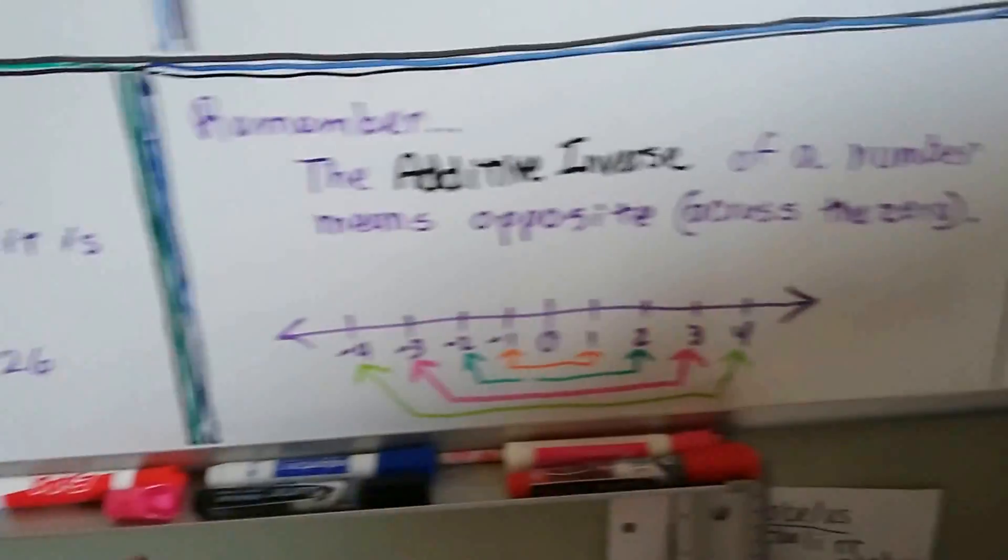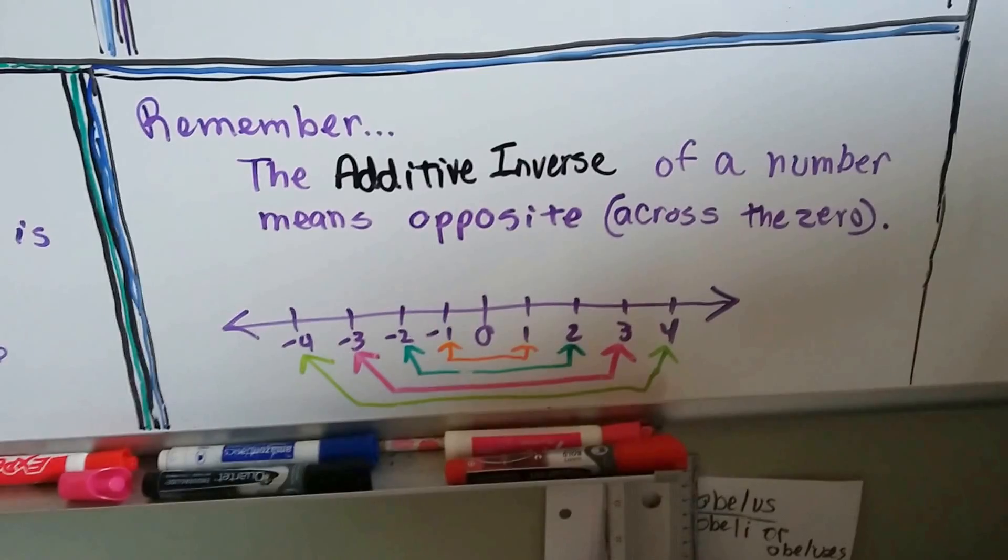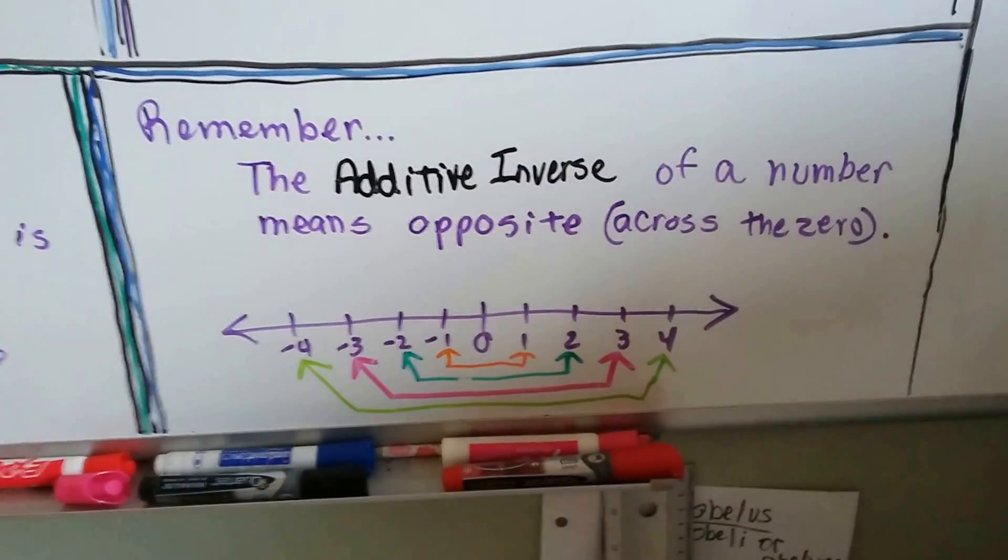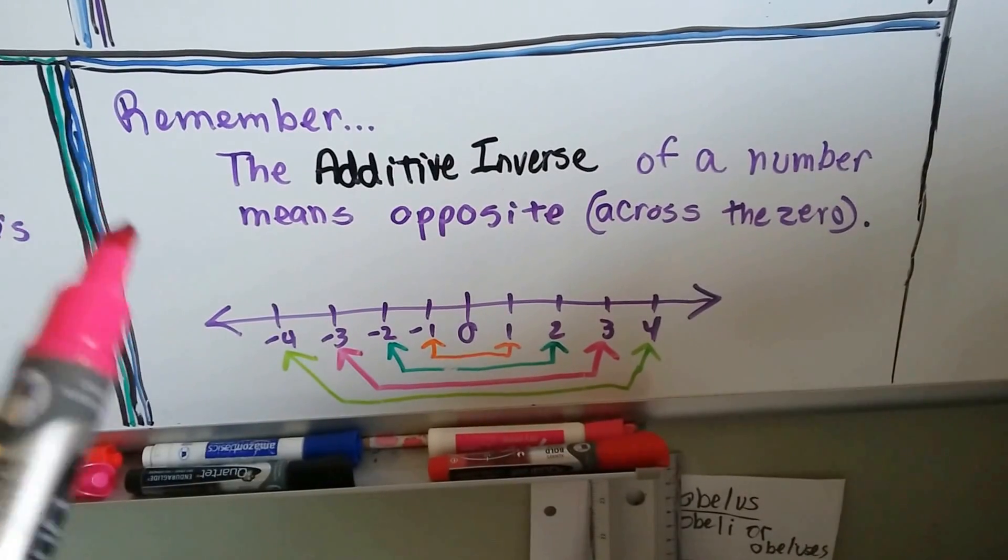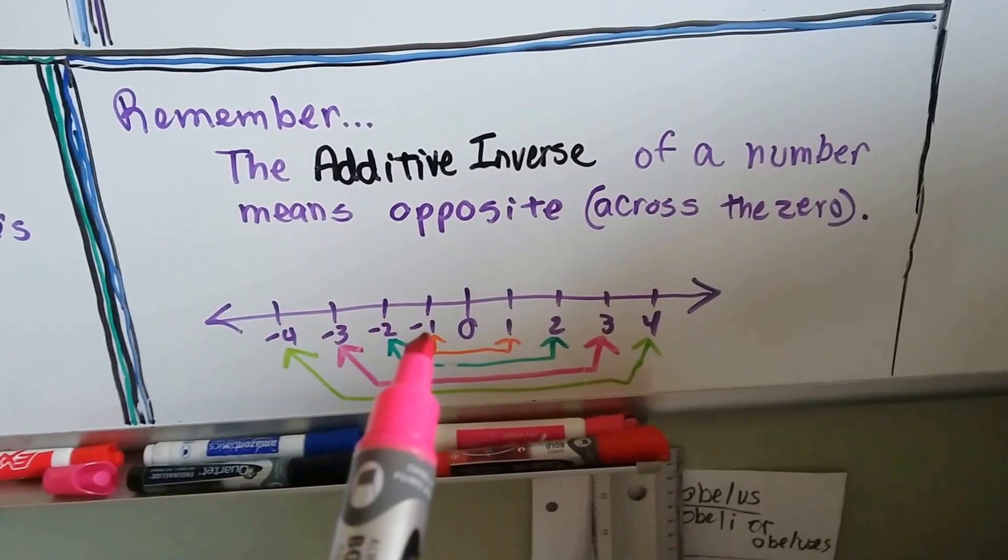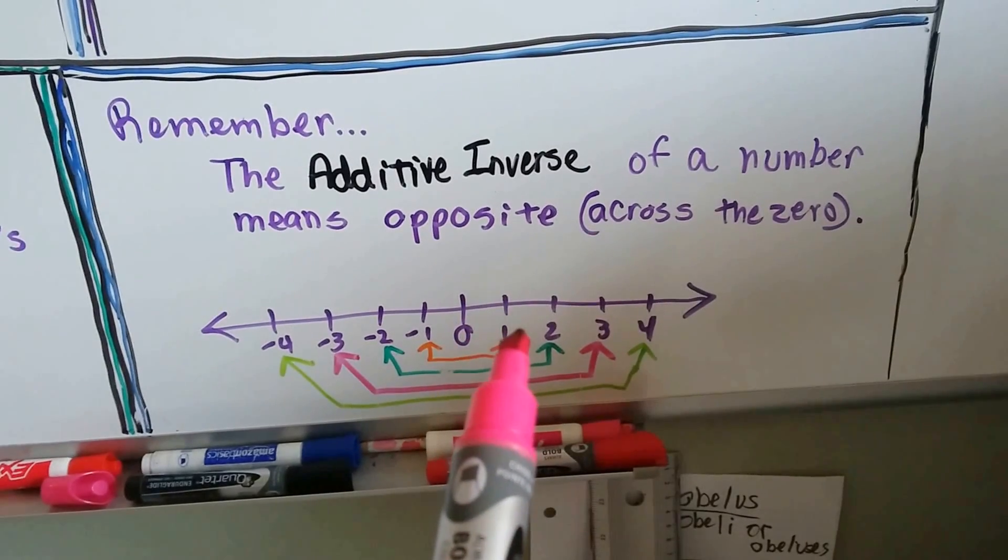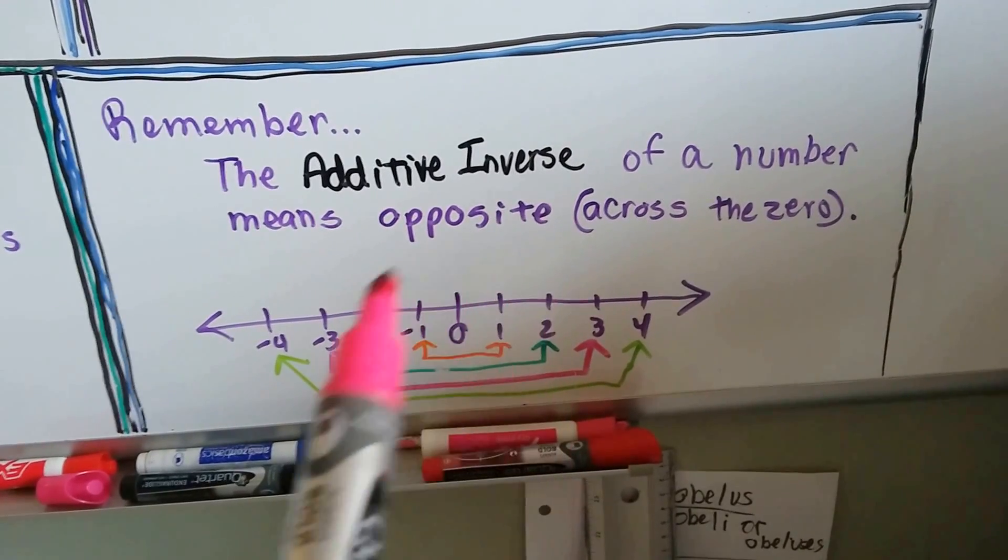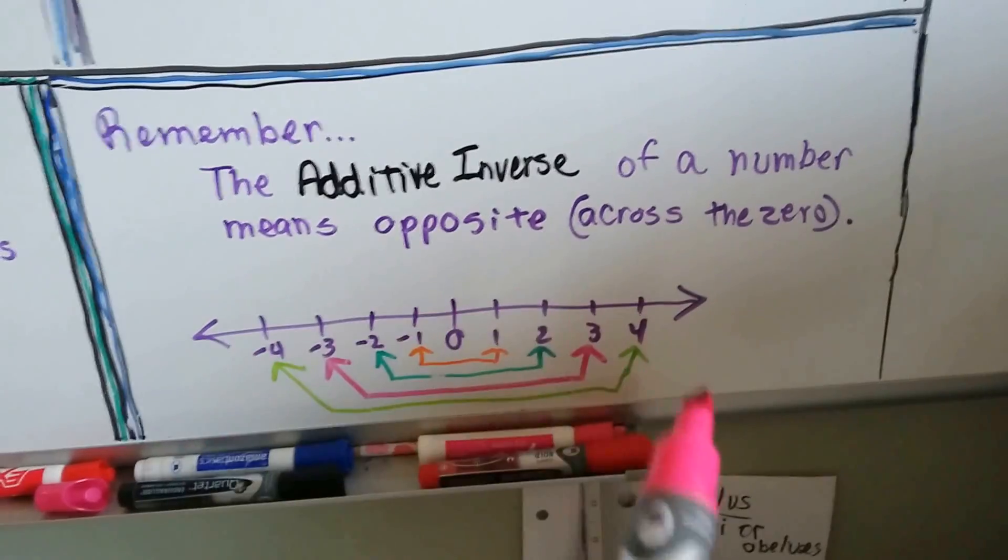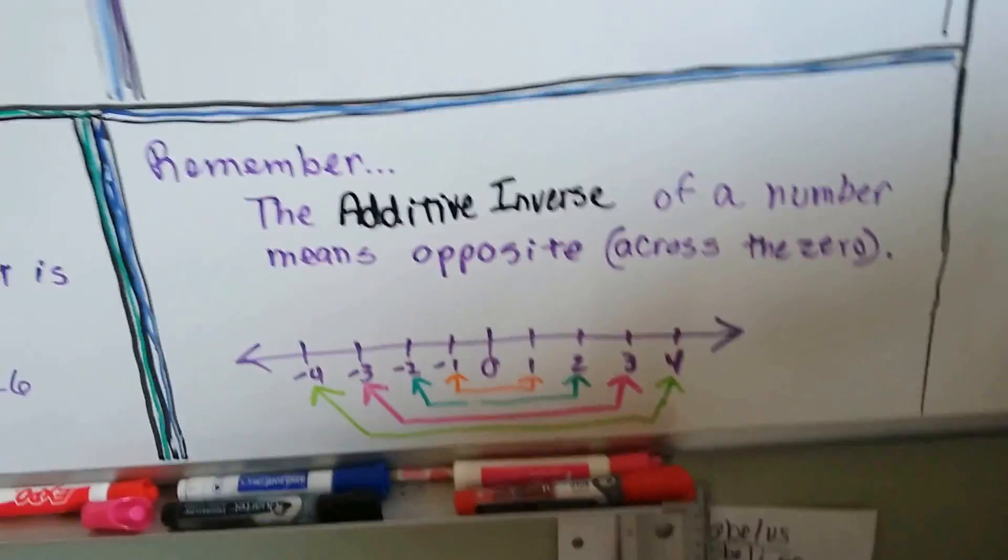I also want you to remember - I know the people who watch every video are like, oh my gosh, she's doing additive inverse again. But yes, I am because maybe someone didn't see it. The additive inverse of a number means it's opposite across the 0. The additive inverse for negative 1 is across 0. It's 1. For 2, it's negative 2. For negative 3, it's 3. For 4, it's negative 4. It's opposite across 0. That's the additive inverse. And you can also remember that zero pairs cancel each other out.